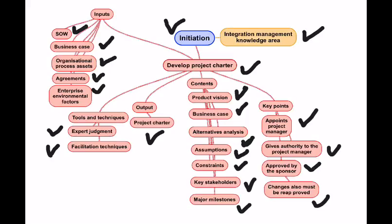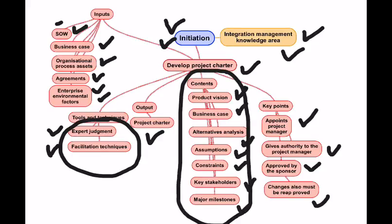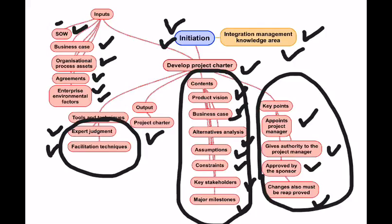To summarize: Develop Project Charter is part of the Initiation Process Group and Integration Management Knowledge Area. The inputs are the Statement of Work, Business Case, Organizational Process Assets, Agreements, and Enterprise Environmental Factors. The tools and techniques include Expert Judgment and Facilitation Techniques. The Charter typically contains the Product Vision, Business Case, Alternative Analysis, Assumptions, Constraints, Key Stakeholders, and Major Milestones. Key points to remember: it appoints the Project Manager, is prepared by the Sponsor, gives authority to the Project Manager, and any changes must be re-approved by the Sponsor.